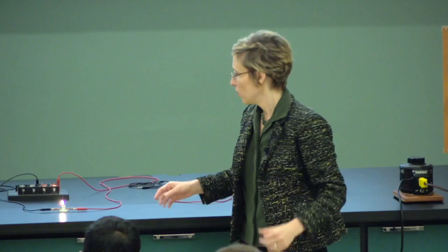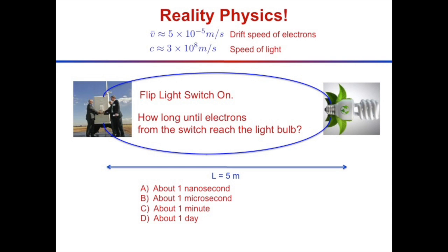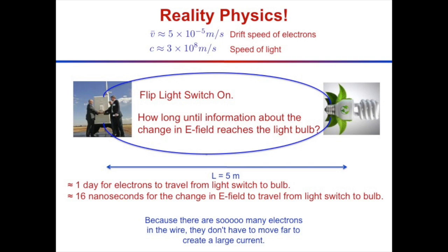We'll figure out how electrons that move so slowly can have such a big effect. The right answer for how long it takes electrons from the switch to reach the light bulb is about a day. Now here's the next calculation: let's think in terms of information and electric fields. An electric field can propagate at the speed of light — when I make a change in the electric field here, that disturbance propagates at the speed of light. How long until the light bulb knows about that change in electric field?